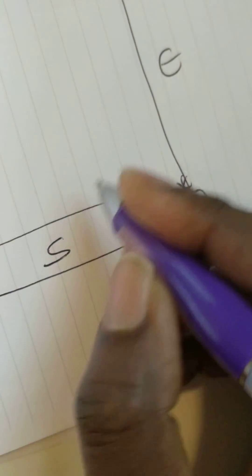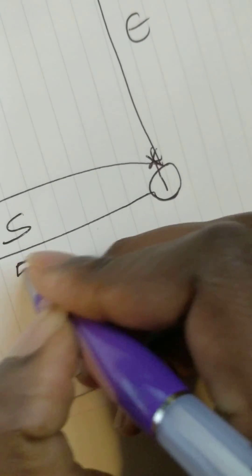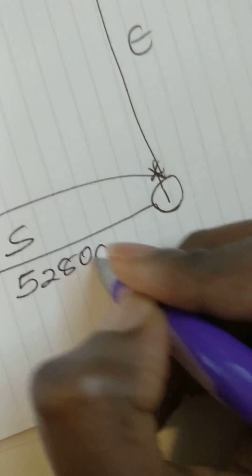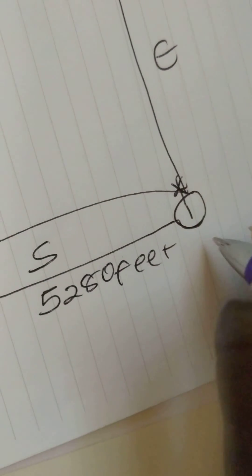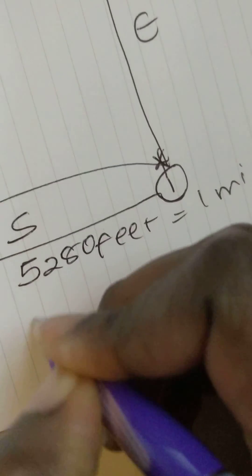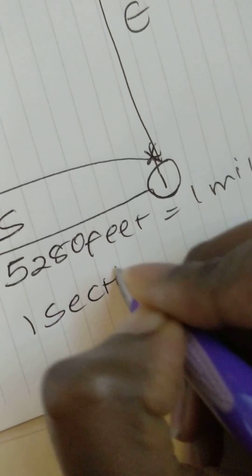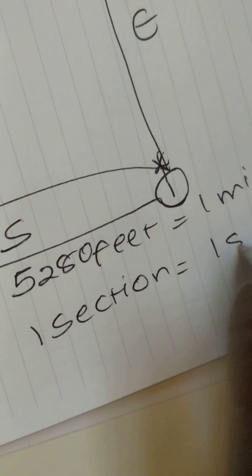I'm going to go west, 5,280 feet, which is one mile. And we know one section is one square mile.